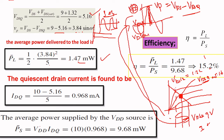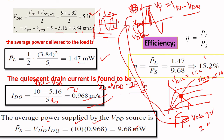Now we want to find the source power, that is the average power supplied by the VDD source, which equals VDD times IDQ. From the basic equation VDS equals VDD minus ID times RD, this formula gives IDQ equals (VDD minus VDSQ) divided by RD, giving 0.986 milliamps. Multiplying 10 volts by 0.986 milliamps gives 9.68 milliwatts. Dividing 1.47 by 9.68, we get an efficiency of 15.2 percent.